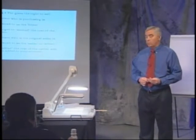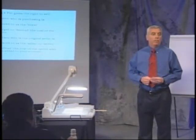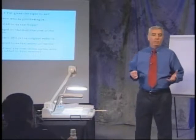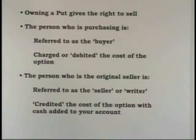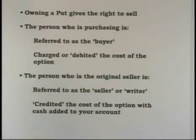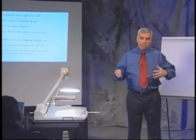The person who buys an option is referred to as the buyer, and they're charged or debited to their account with the price of the option. The person who sells the option is the seller or the writer, and the seller will receive a cash credit whenever he sells an option. So if he sells a Cisco Systems 50 call option at $5, he'll receive $500 in his account. If you're the option buyer, your account will be debited $500.